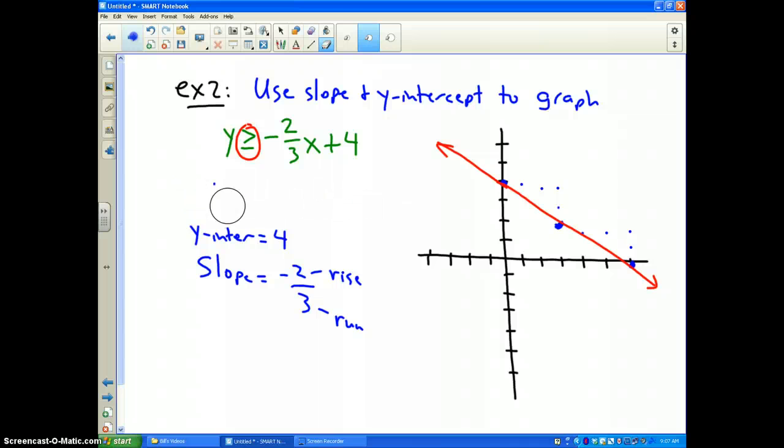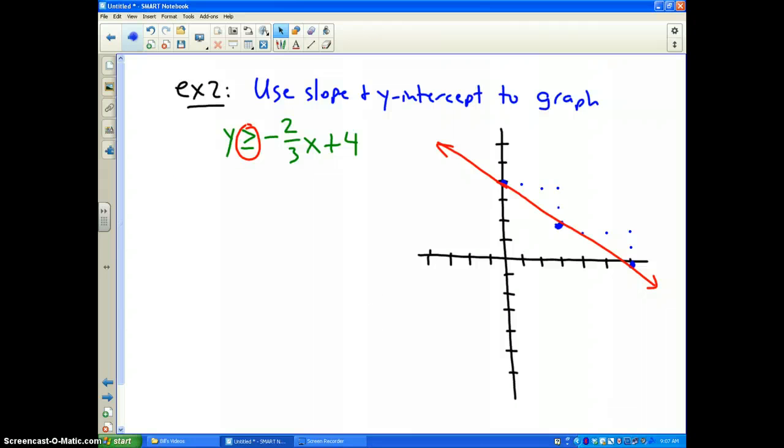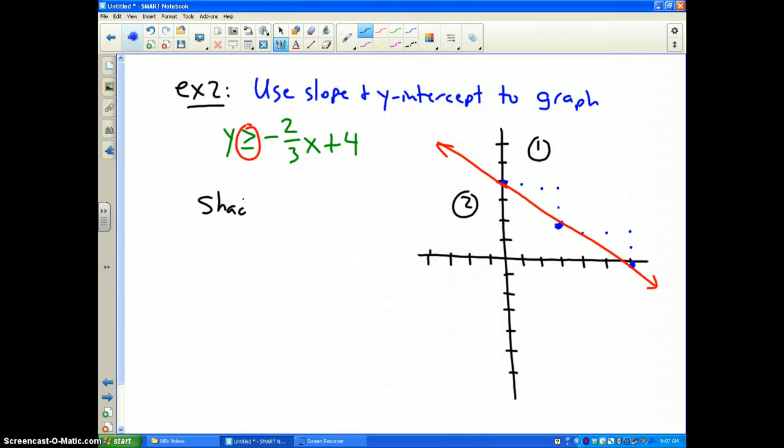Now, again, we've divided our coordinate plane into two parts. The part number one, part number two. Which side do we shade? So, we need to, since it doesn't go through (0, 0), that's our easiest test point.